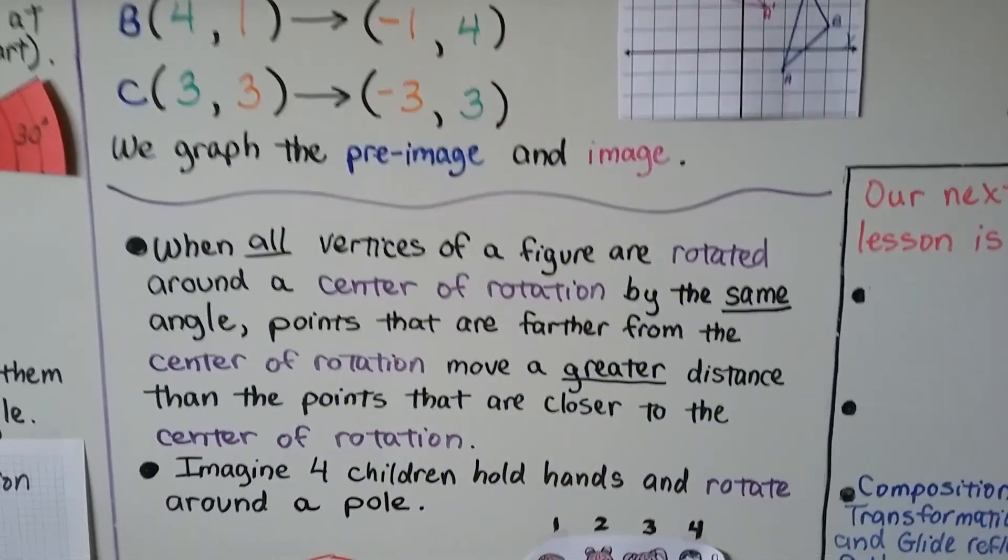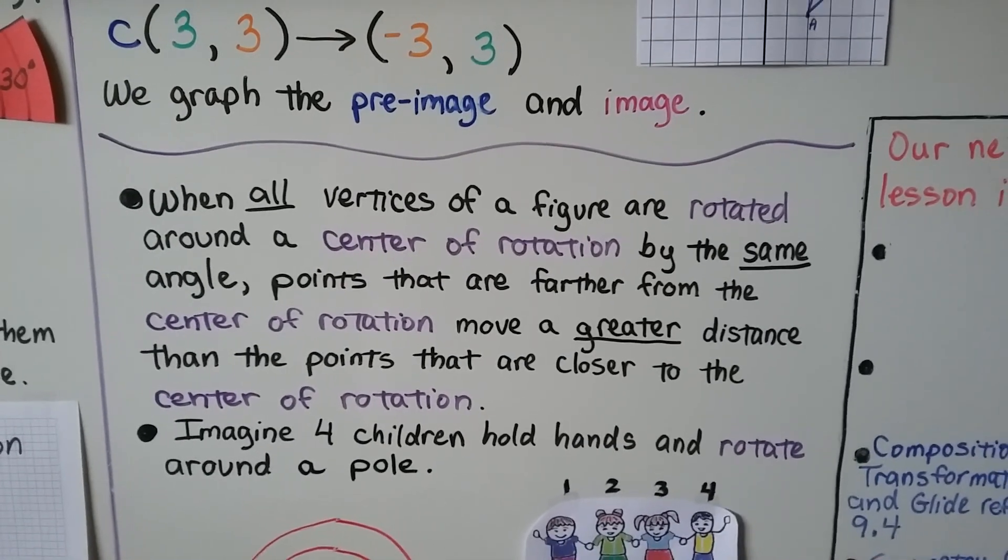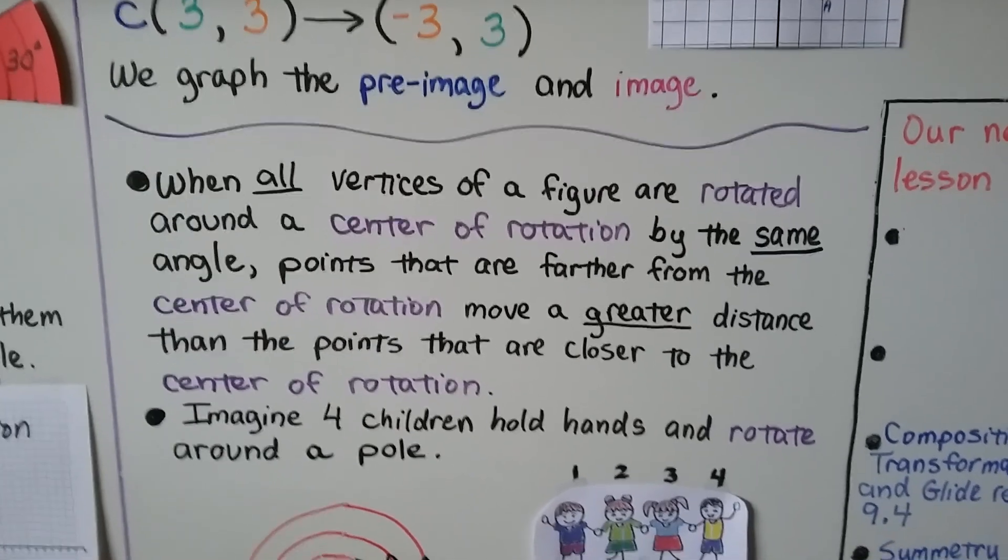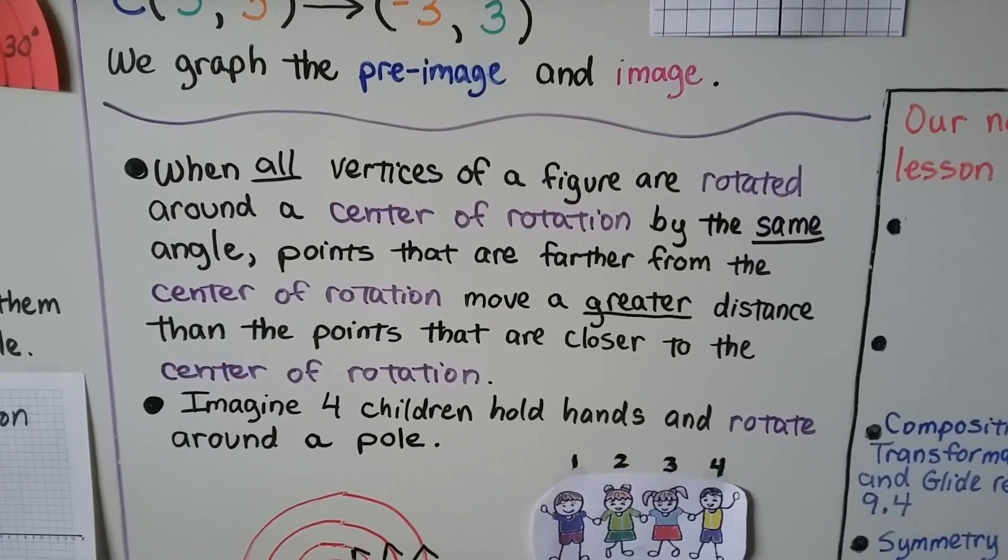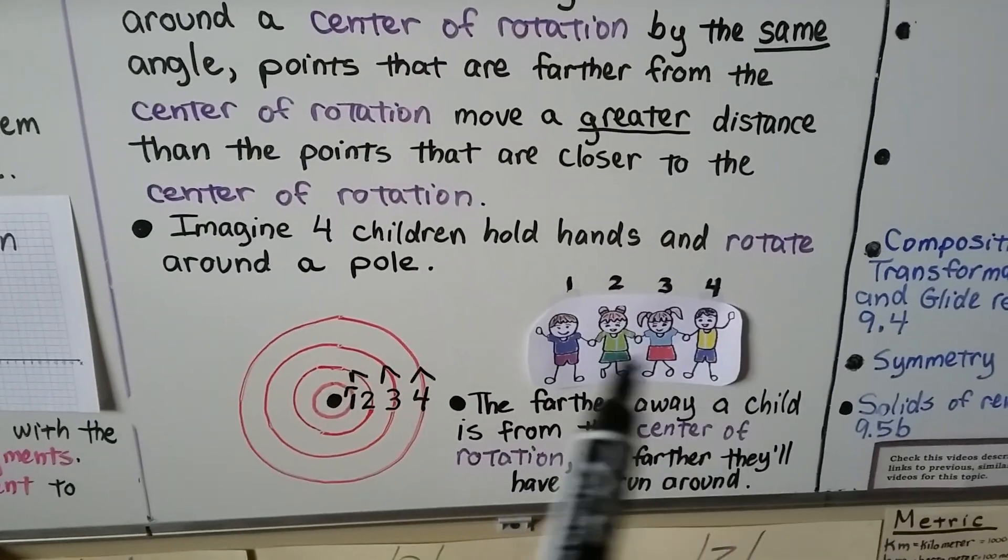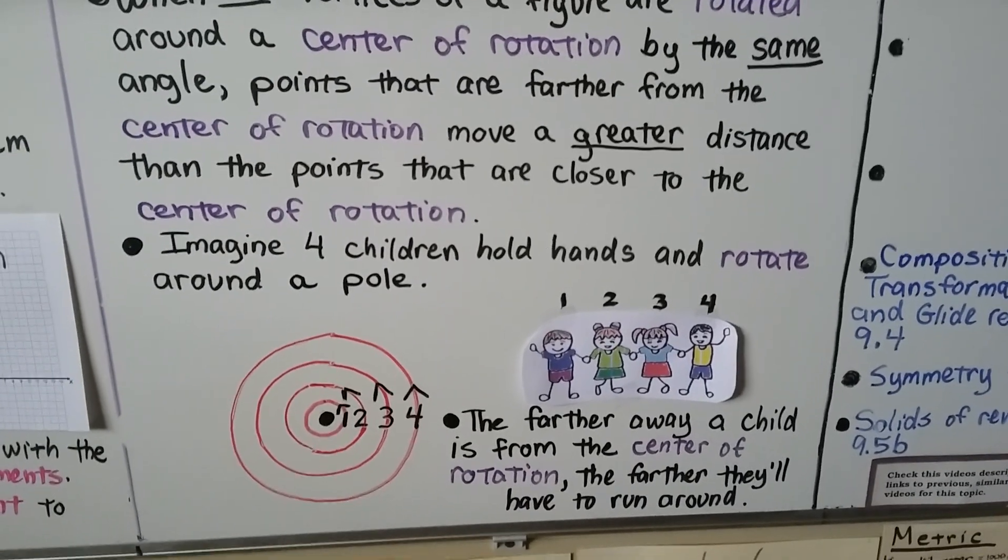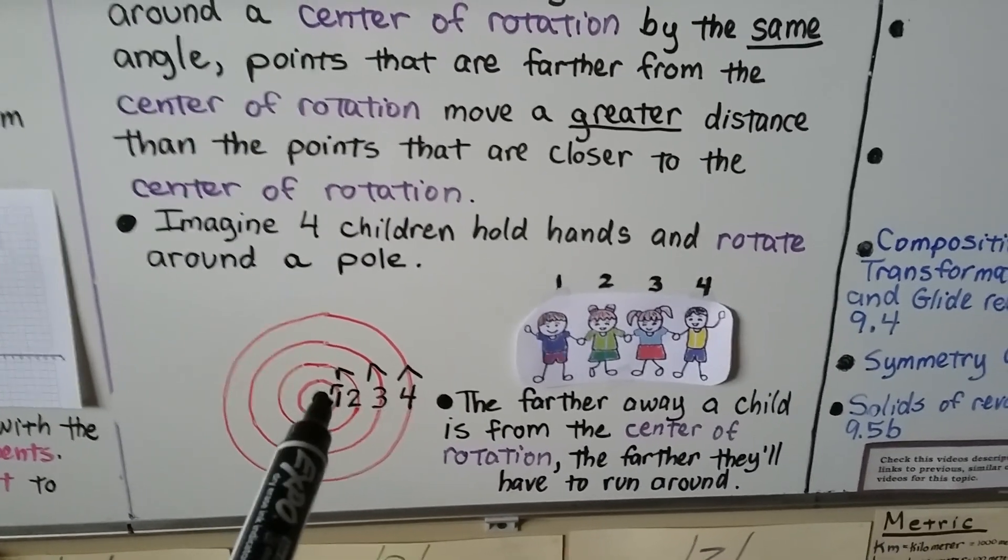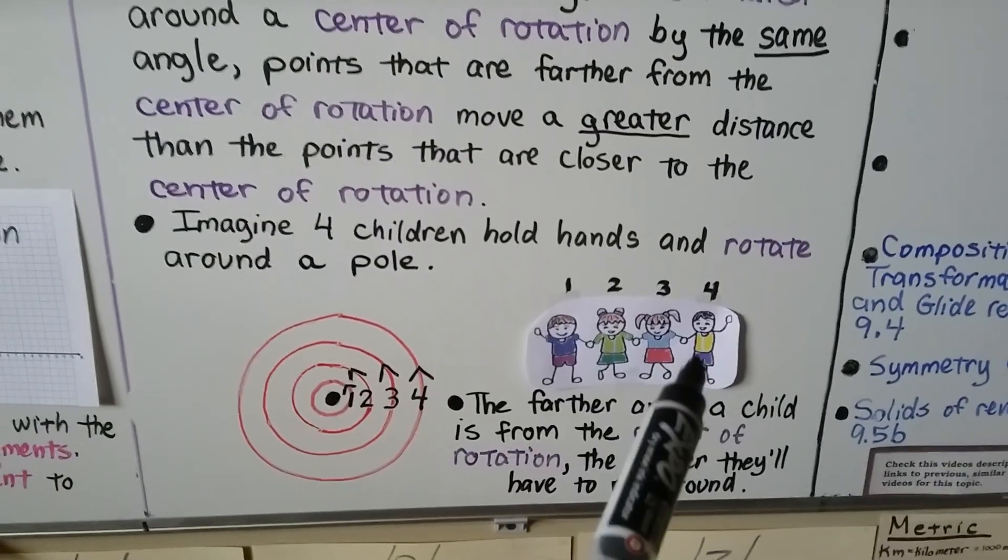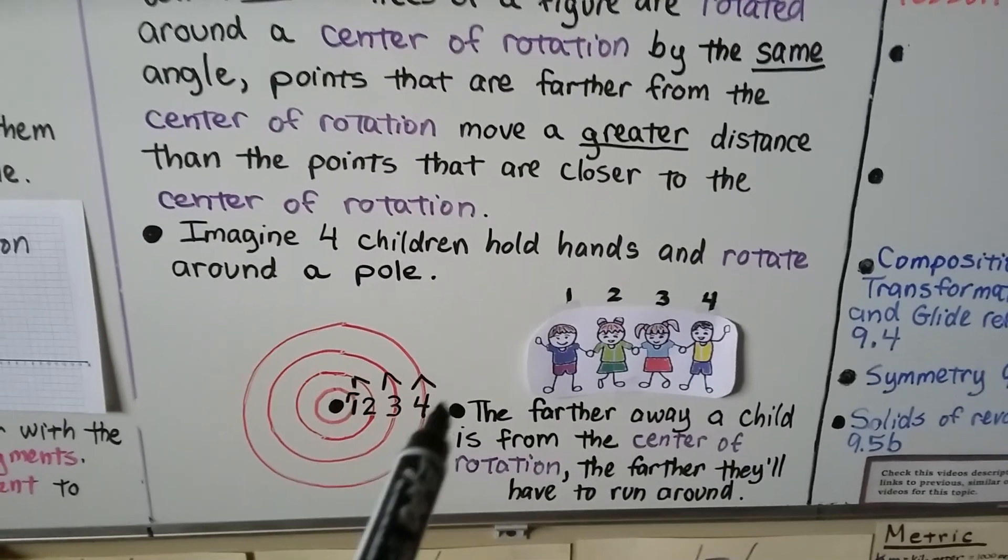When all vertices of a figure are rotated around the center of rotation by the same angle, points that are farther from the center of rotation move a greater distance than the points that are closer to the center of rotation. So we have these 4 children that are holding hands and they're going to rotate around a pole. And the farther away a child is from the center of rotation, the farther they'll have to run around. This poor little guy, this 4th guy in the yellow shirt, is going to have to run a lot farther than this 1st guy.